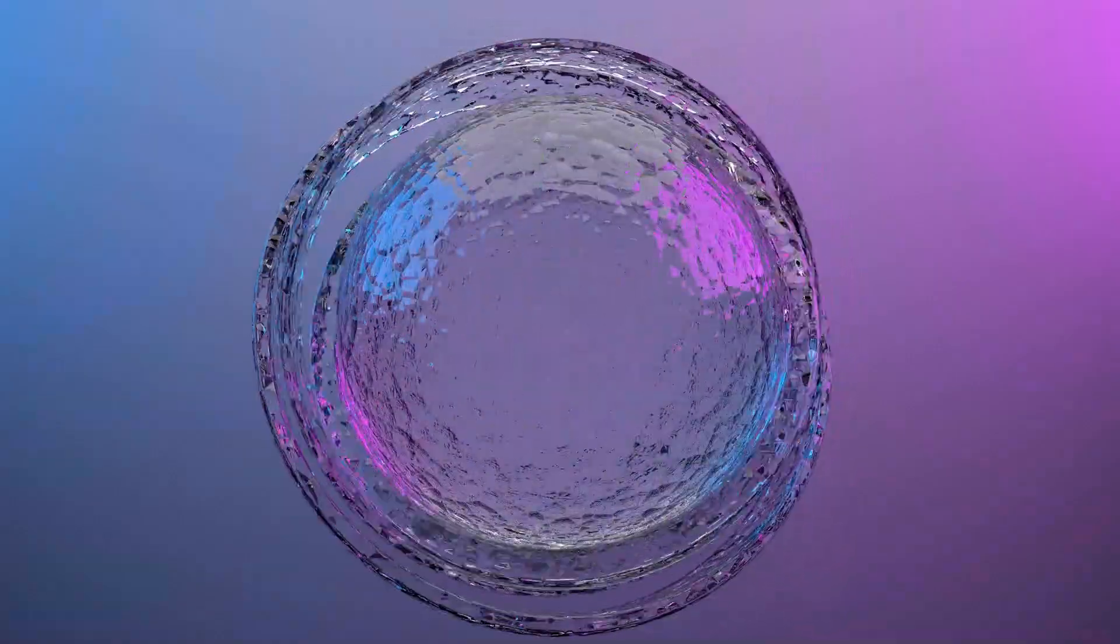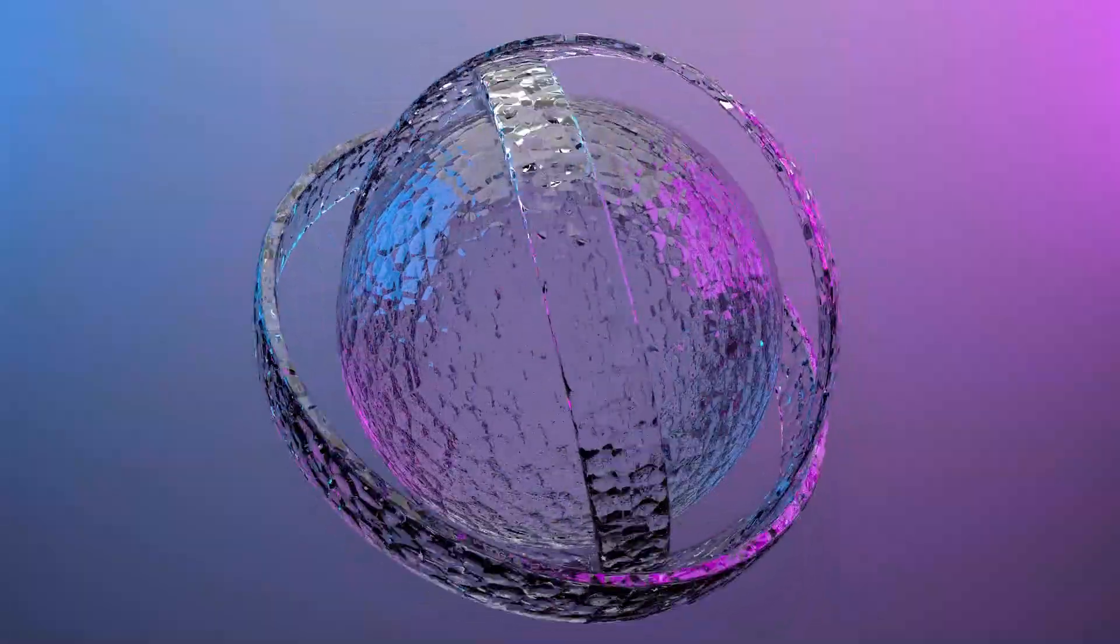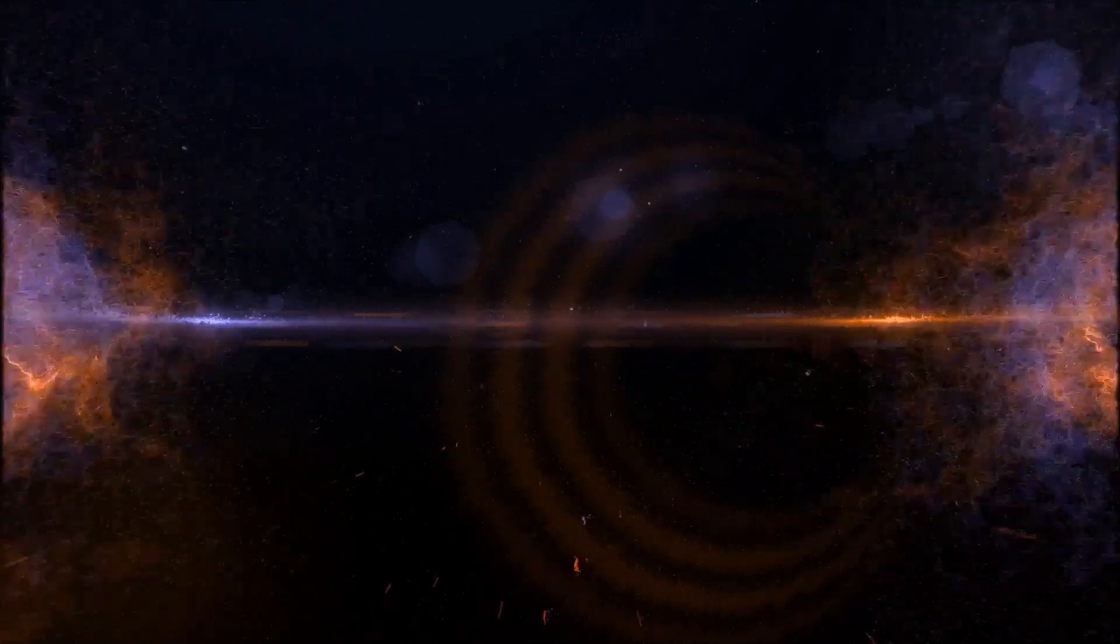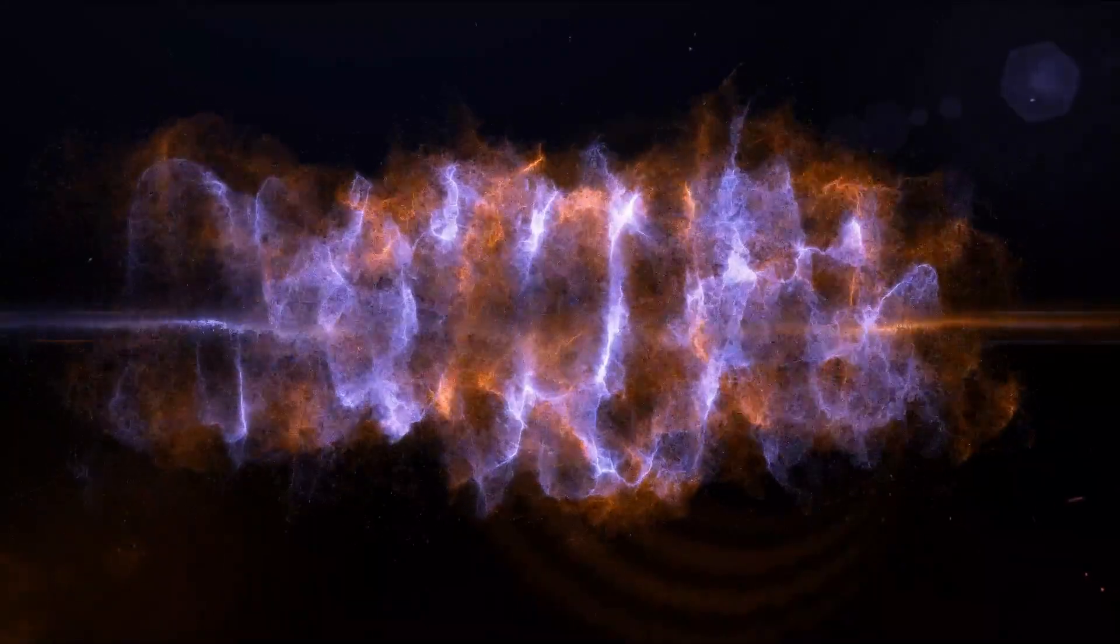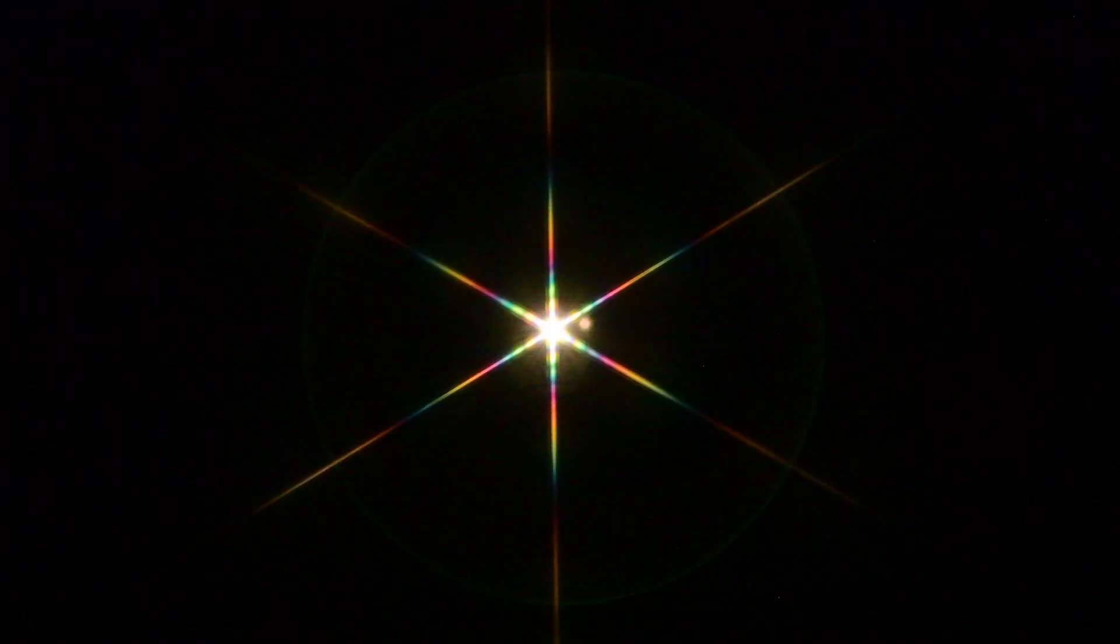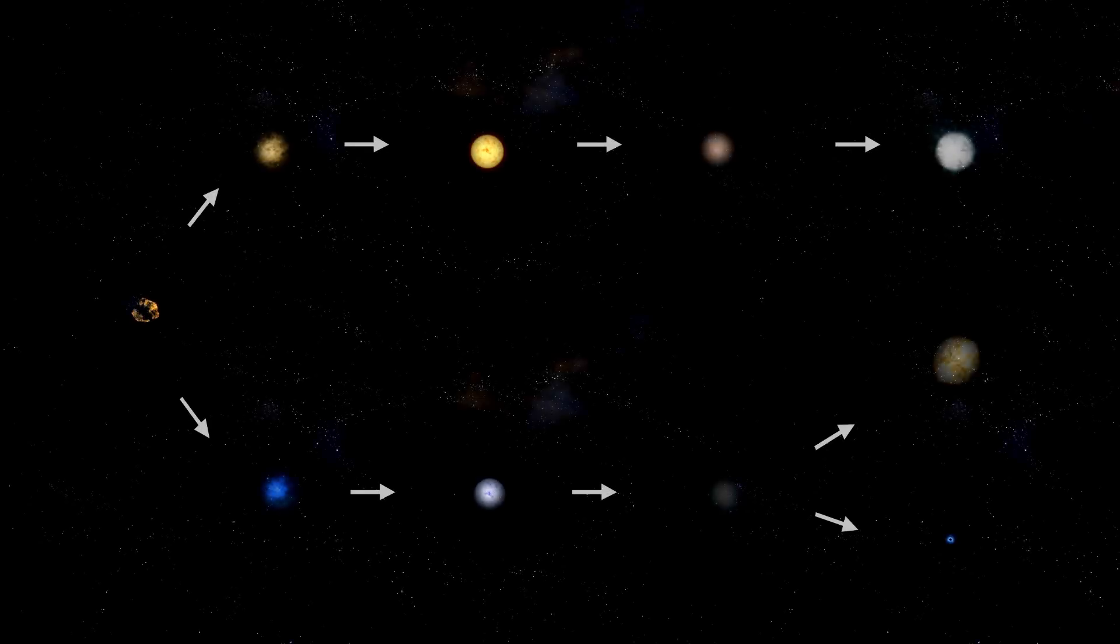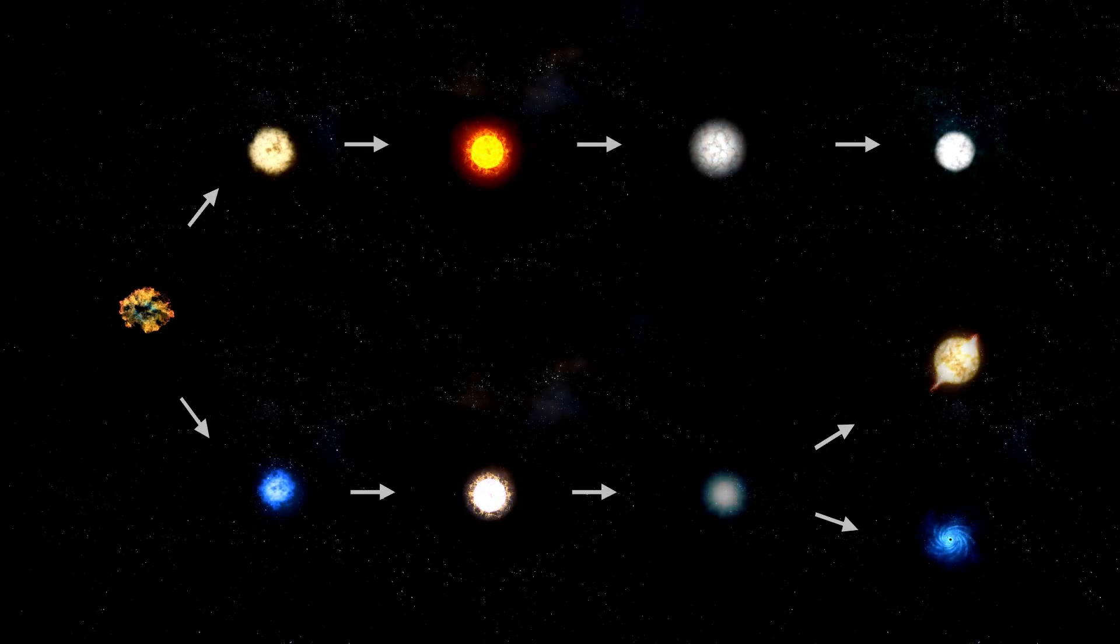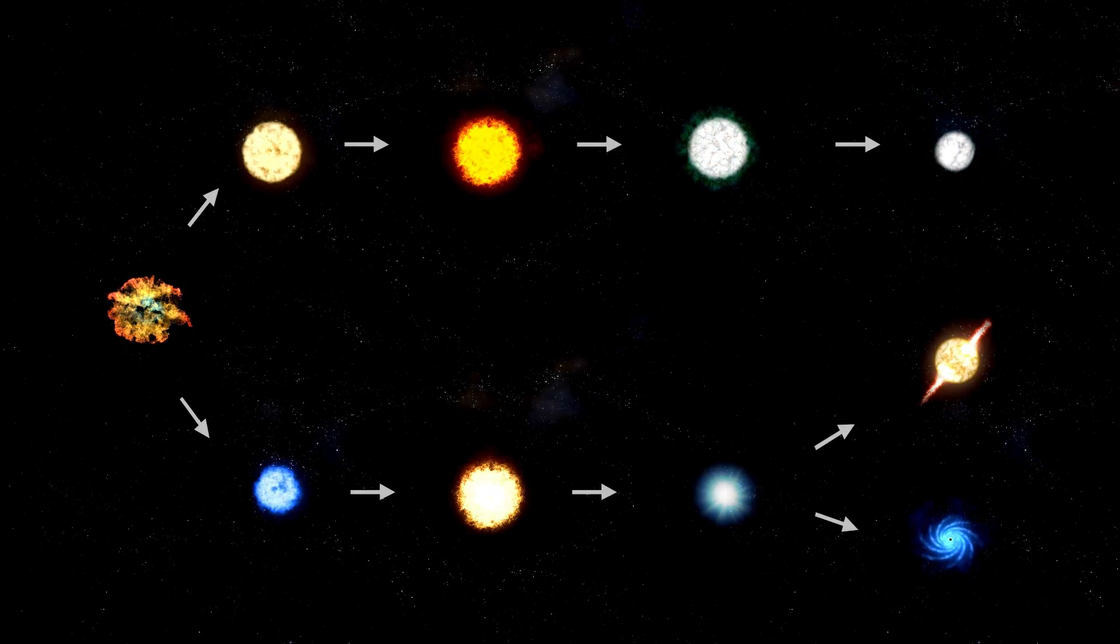Given the proximity of Betelgeuse's explosion, it's natural to wonder if Earth is at risk. Fortunately, the star is far enough away to pose no direct threat. Still, the blast will release waves of radiation, gamma rays, and electromagnetic energy that will travel across light years, potentially reshaping interstellar dust clouds and altering how starlight reaches us. These changes could forever transform our view of the universe.